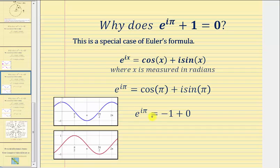And therefore, e raised to the power of i pi equals negative one plus zero. So if we add one to both sides of the equation, we have Euler's identity, or Euler's equation. e raised to the power of i pi plus one equals zero.